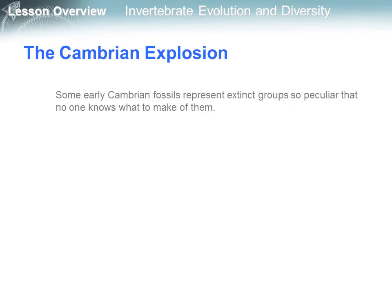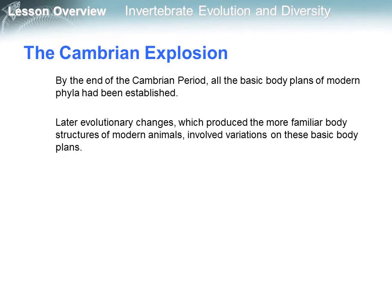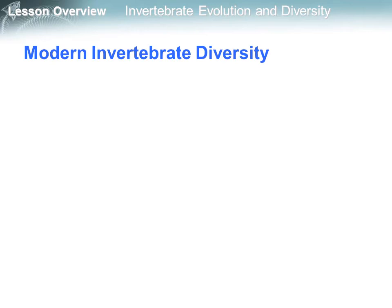Some early Cambrian fossils represent extinct groups so peculiar that no one knows what to make of them. By the end of the Cambrian period, all the basic body plans of modern phyla had been established. Later evolutionary changes, which produced the more familiar body structures of modern animals, involved variations on these basic body plans.